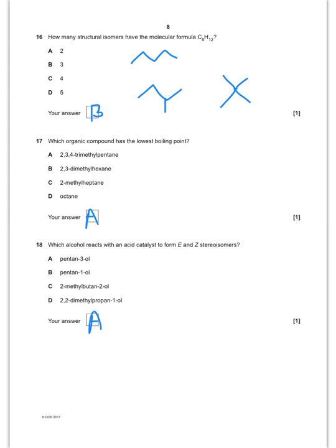Which organic compound has the lowest boiling point? They've all got the same number of isomers of each other. So they've all got the same formula. You want the most spherical molecule or the most branched molecule, and therefore the answer is A.